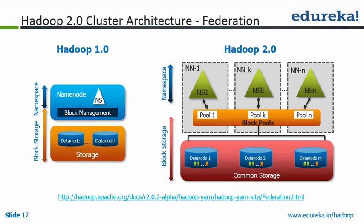Vertical limit means that you cannot scale further because you cannot add more RAM to that machine. So instead of having just one set of NameNodes — and when I say one set, I mean one active NameNode, one passive NameNode, and associated secondary NameNodes — in Hadoop 2.0 we introduced Federation.